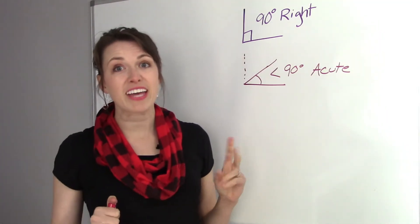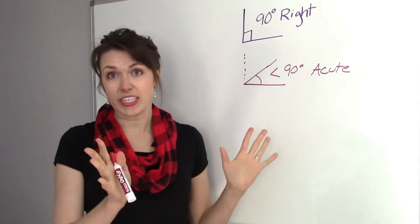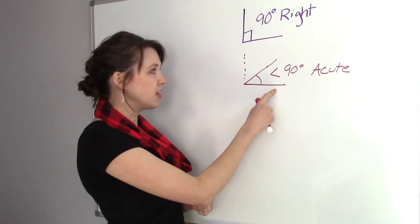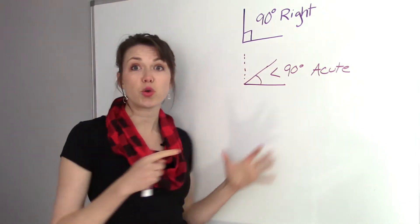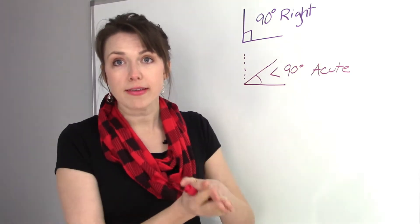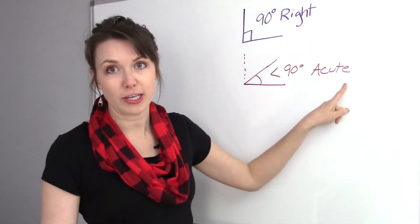Our second type of angle is any angle that is less than 90 degrees. So look at this. We've got the little 90 degree angle, and this one is less. So it could be as big as 89 degrees, or as little as like one degree. And what is it called? It's called acute.